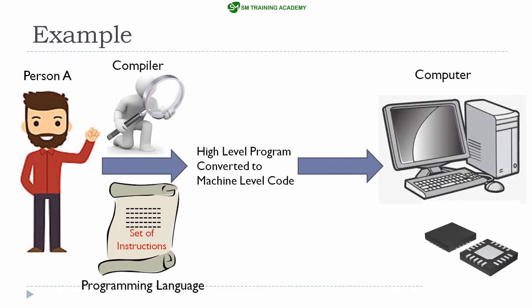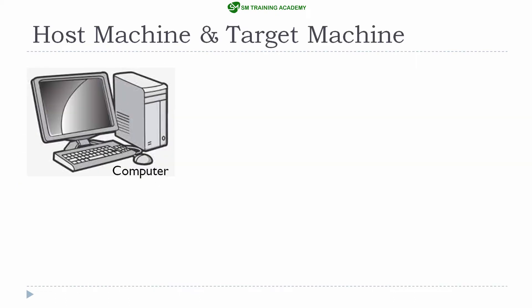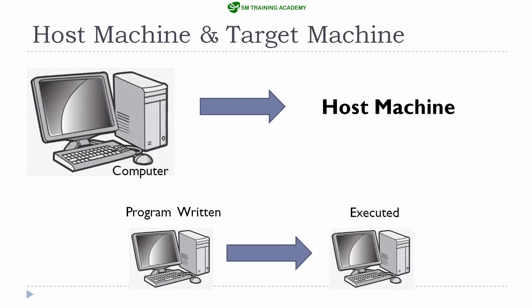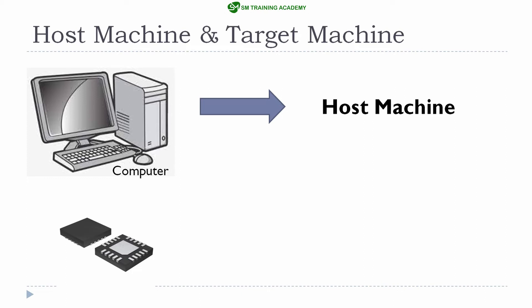Let's take the first example: the program written for a computer. The computer in the earlier example is nothing but the host machine, because when you write a program for a computer you develop and write the program in this computer for this computer. The program is compiled by a compiler available on this computer and executed on the same machine — that is why it is called the host machine.